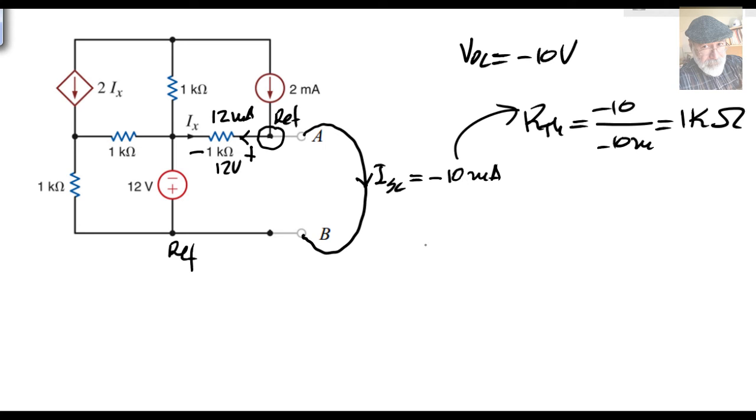So we have an equivalent circuit, an equivalent Thevenin, at the port AB for the circuit seen by the 3 kilo ohm resistor. 1 kilo ohm resistor here, and A is higher than the bottom by negative 10 volts. Or what is the same? I can draw it like this: 10 volts like that. That is my equivalent circuit.